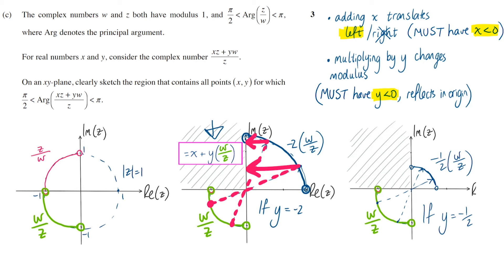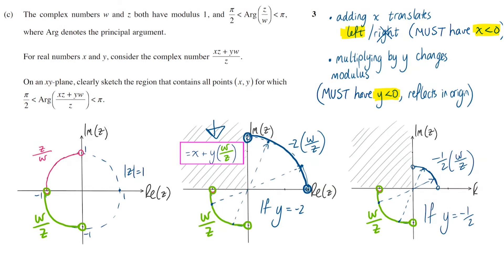Looking at this example where Y is negative 2, the worst case would be where my original value of W over Z was just on here, really, really close to the real axis there. Then after reflection, I'm very far over to the right, and I need to move very far back to the left. But how far? Well, remember, this length here is 2, so I would need to move 2 units to the left, meaning that X would need to be less than negative 2 to ensure that no matter which values of W and Z I started with, I would always end up in the second quadrant. Similar thing with this second example, if Y is negative a half, the worst case is if I end up very far over to the right here, I would need to move more than half a unit to the left. So X should be less than negative a half.